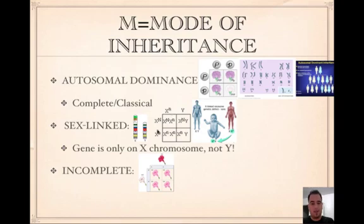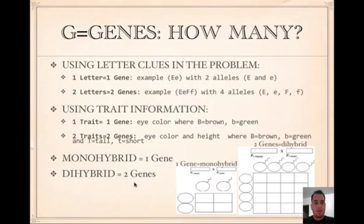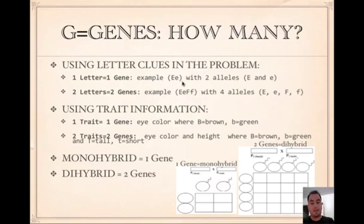Incomplete dominance is when the traits blend. G is genes — how many genes? Use the letters in the problem to figure out how many. If you see one letter, for example big E little E, that's one gene. When they're talking about two letters, for example E and F, they're talking about two genes and you're going to see four alleles.